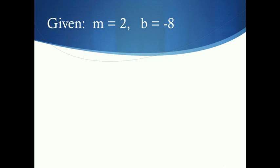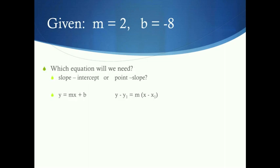Let's start with example 1, where we're given m equals 2 and b equals negative 8 — slope equals 2 and y-intercept equals negative 8. We look at what we're given and decide which equation to use. Since we have slope and y-intercept, we use slope-intercept form. We just plug in: y equals 2x minus 8.